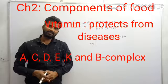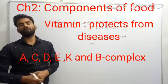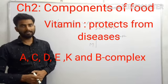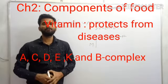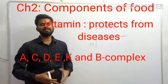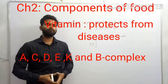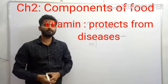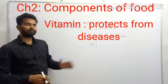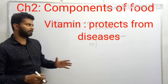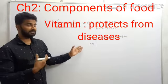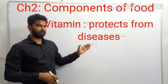The vitamins we get from food are A, C, D, E, K, and B complex. B complex is a combination of B6, B12, and many other vitamins. These vitamins help protect our body from disease.